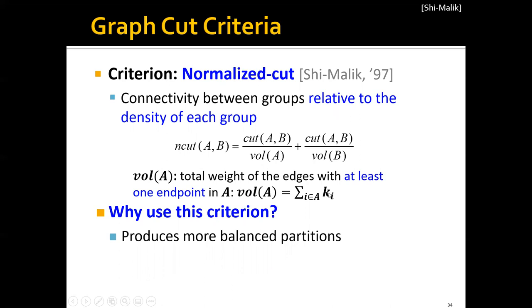Volume of A, vol(A), is the total weight of the edges with at least one endpoint in A. So basically, this is the sum of degrees of all the nodes in group A. Similarly, the second term can be computed as the original cut over the volume of group B.